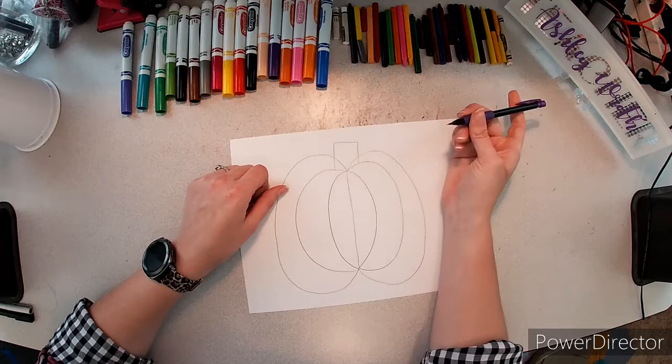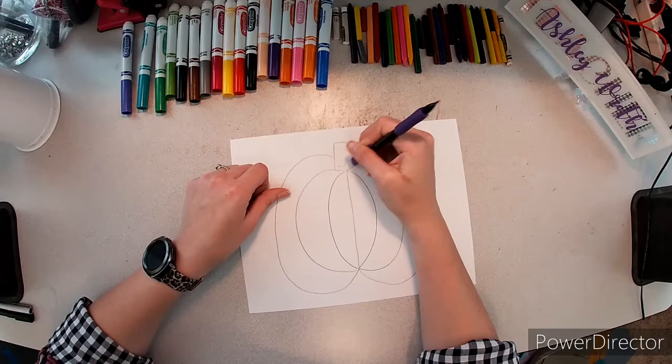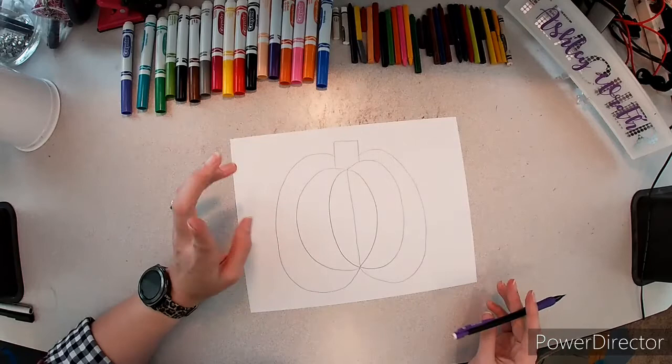Then do a line across, like a square. And we're going to erase this curve and this curve. And that is our pumpkin's stem. So now we get to do our apples.